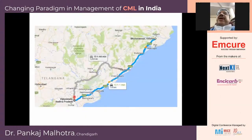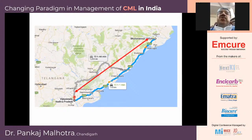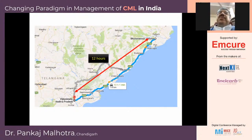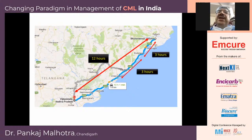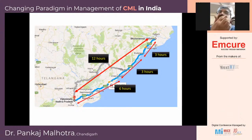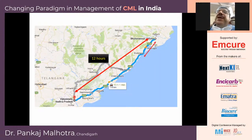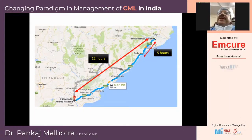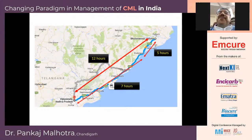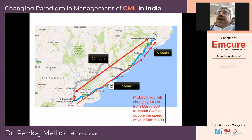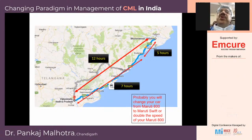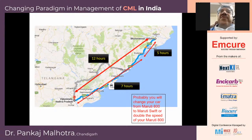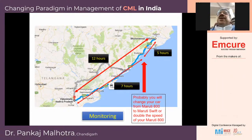Take an example: you have a Maruti car and you want to travel from Puri to Vijayawada in Andhra Pradesh, which takes 12 hours. Puri to Berhampur takes 3 hours, Berhampur to Vizianagaram another 3 hours, then another 6 hours to reach Guntur or Vijayawada. If it takes 5 hours just to reach Berhampur, you need 7 more hours — meaning either you change your car (switch from Imatinib to a second-line TKI) or you double the speed (double the dose of Imatinib), which remains an option for very poor Indian patients who cannot afford second-line TKI. This is what monitoring means.